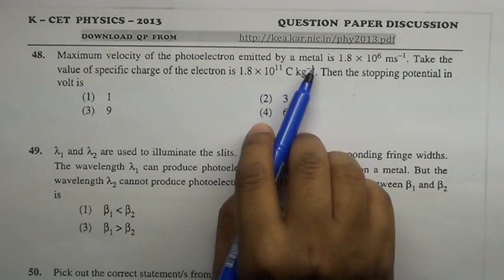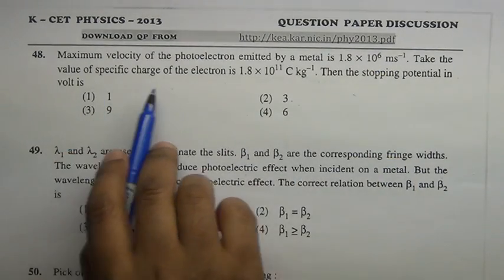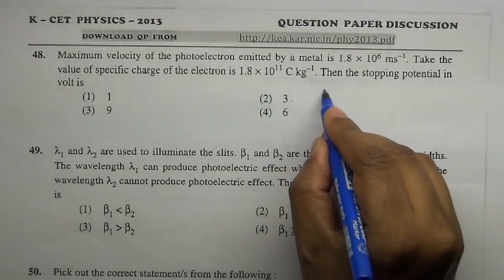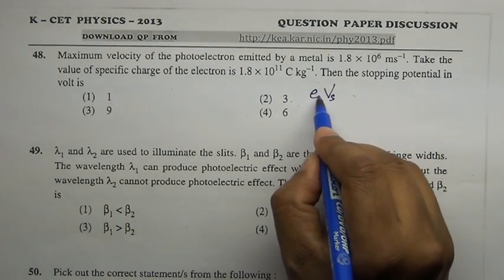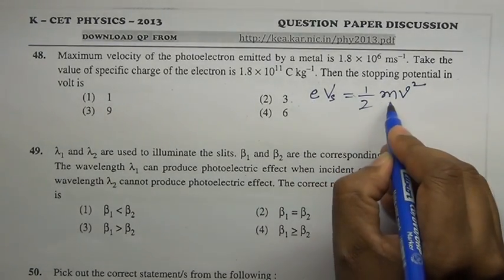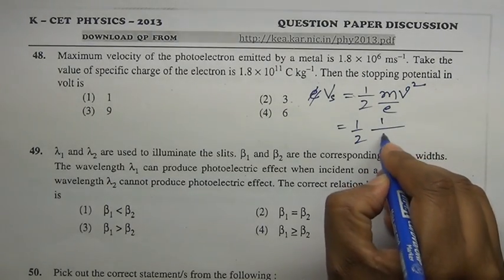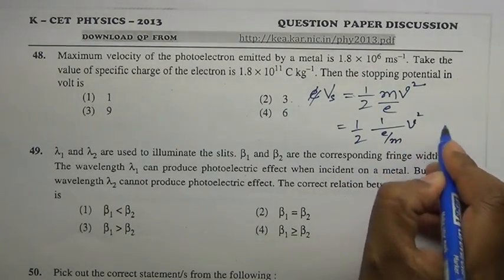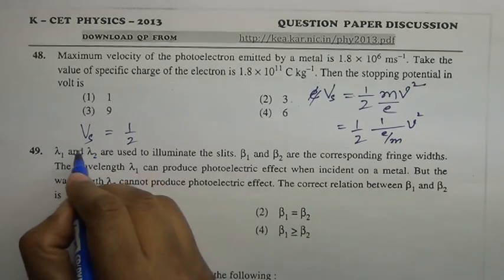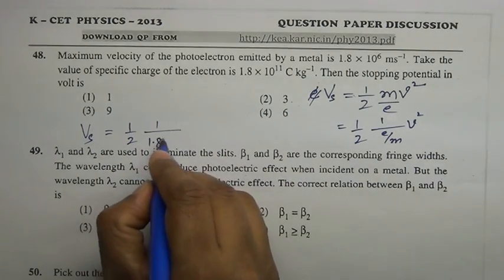Question 48: The maximum velocity of photoelectrons emitted by a metal is 1.8 × 10⁶ m/s. The specific charge is 1.8 × 10¹¹ C/kg. For stopping potential Vs: charge times stopping potential equals kinetic energy, which is half mv². So eVs equals half mv², meaning Vs equals (1/2)(m/e)v², which is half times (1/specific charge) times v².